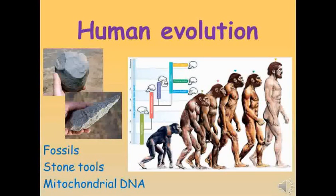Evolution is the unifying idea in biology. In the B1 unit, we looked at natural selection as a basic mechanism for how species change. In B2, we looked at fossils and pentadactyl limbs as a couple of pieces of evidence that scientists can use to study how species change over time. In B3 and in this video, we'll look specifically at how human evolution can and has been studied — fossils, stone tools and mitochondrial DNA as three ways of doing this — before looking at factors that have driven human evolution in the past, including climate change.